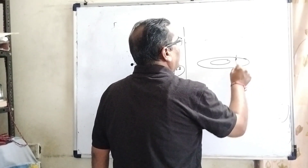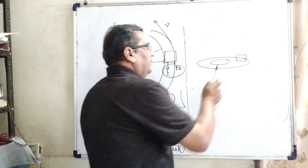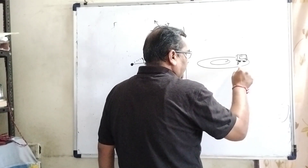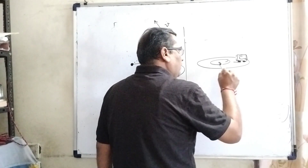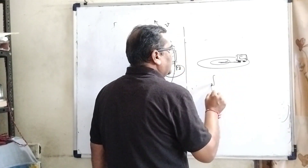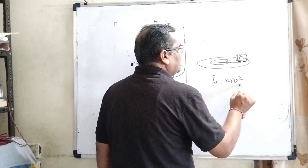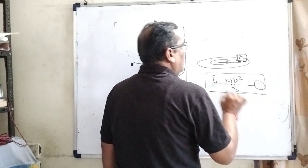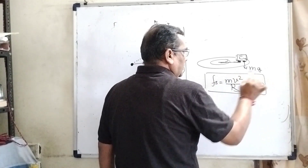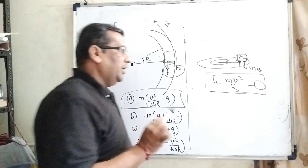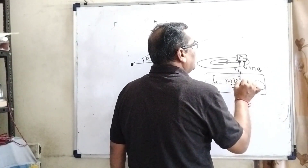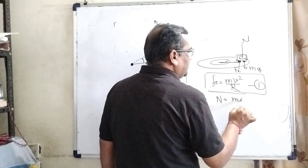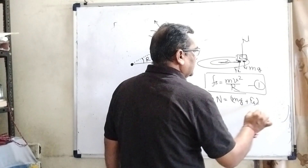We are taking this car on a level circular road. The frictional force acting between the tire and the surface provides the centripetal force, so frictional force equals mv²/R — that is the first equation. Now mg is acting in the downward direction, and according to the question, fl is also acting downward. These two forces together equal the normal force, so normal force equals mg plus fl — that is the second condition.